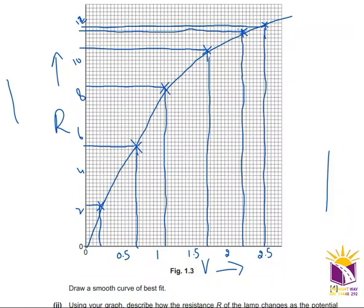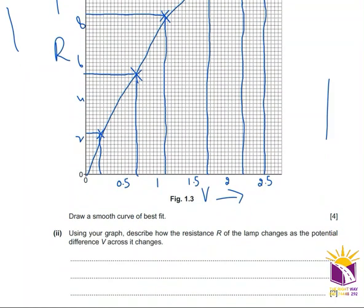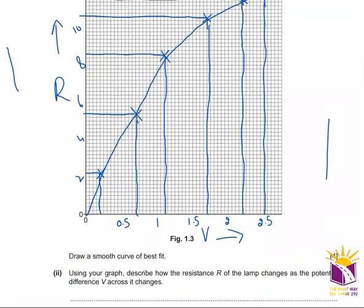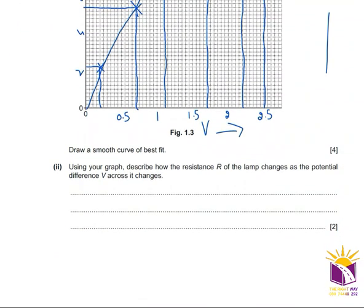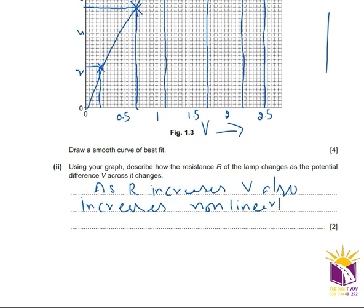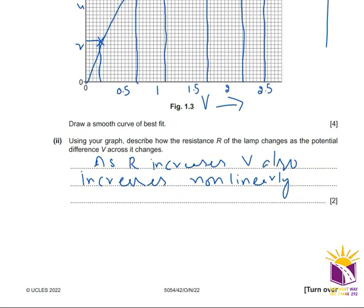Using the graph, describe how resistance R changes as potential difference V increases: as V increases, R also increases, but non-linearly — it does not produce a straight line, so the relationship is non-linear.